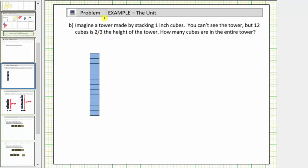Two-thirds means two copies of one-third. Which means these twelve cubes represents two copies of one-third of the height of the entire tower.